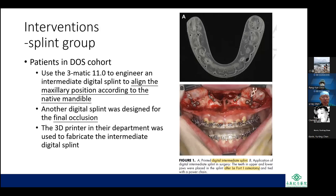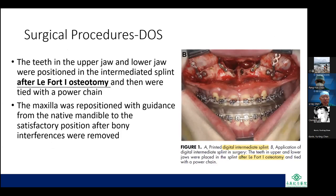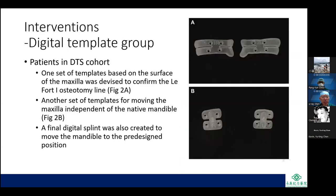In the DOS cohort, software was used to engineer an intermediate digital splint to align the maxillary position according to the native mandible, and another digital splint was designed for the final occlusion. A 3D printer fabricated the intermediate digital splint. Surgically, teeth in the upper and lower jaw were positioned in the intermediate splint after Le Fort I osteotomy and tied with a power chain. The maxilla was repositioned with guidance from the native mandible after bony interferences were removed.